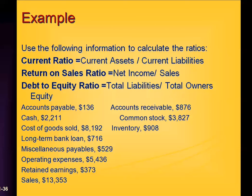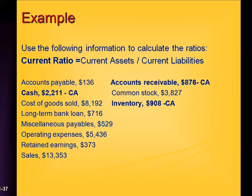Let's compute some of these ratios based on the provided data: accounts payable at 136, cash at 2,211, cost of goods sold at 8,192, and so on. Starting with the current ratio — current assets divided by current liabilities — we first identify the current assets. Cash is a current asset, accounts receivable is a current asset, and inventory is a current asset. These three accounts can all be turned into cash in less than 12 months.